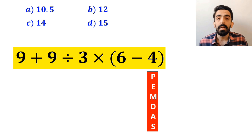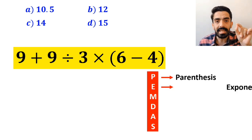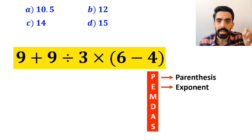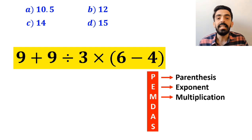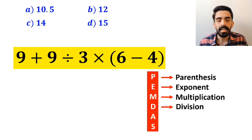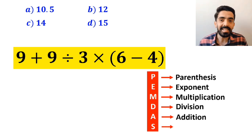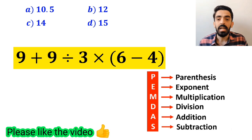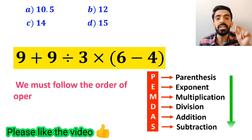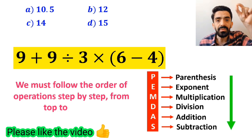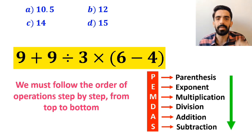In this rule, P stands for parenthesis, E stands for exponent, M stands for multiplication, D stands for division, A stands for addition, and S stands for subtraction. We must follow the order of operations step by step from top to bottom.